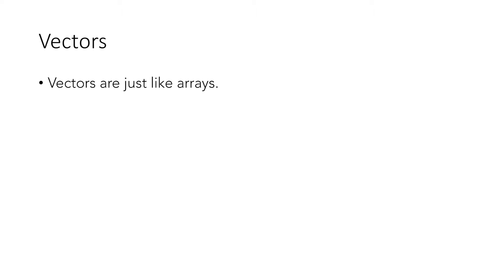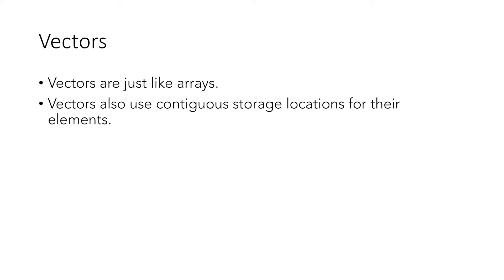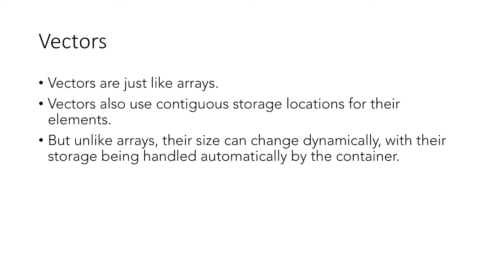Vectors are similar to arrays and just like arrays, they use contiguous storage locations for their elements. But unlike arrays, their size can change dynamically, with their storage being handled automatically by the container.